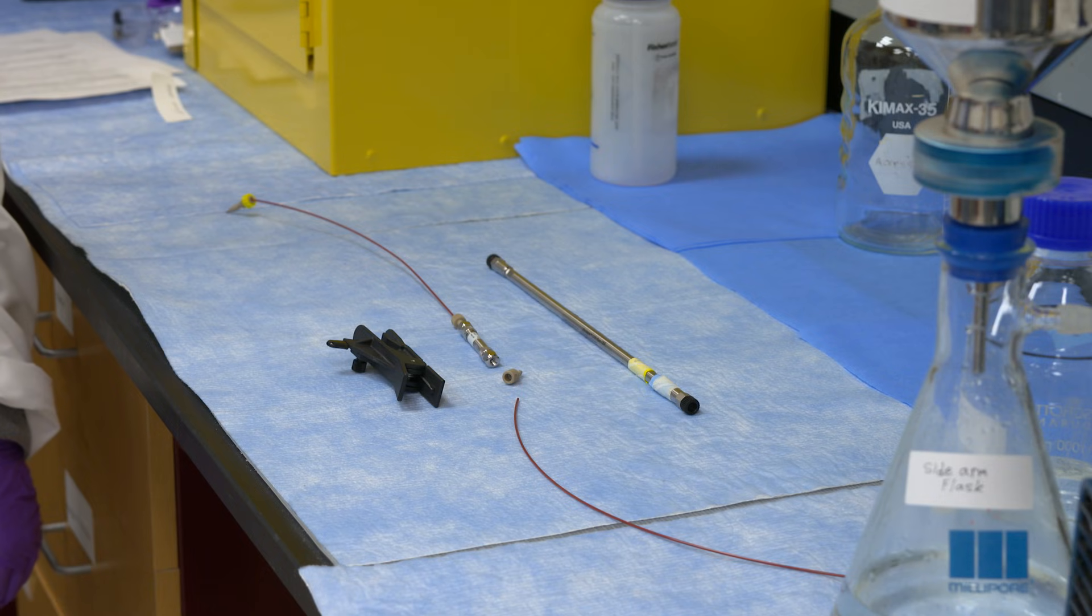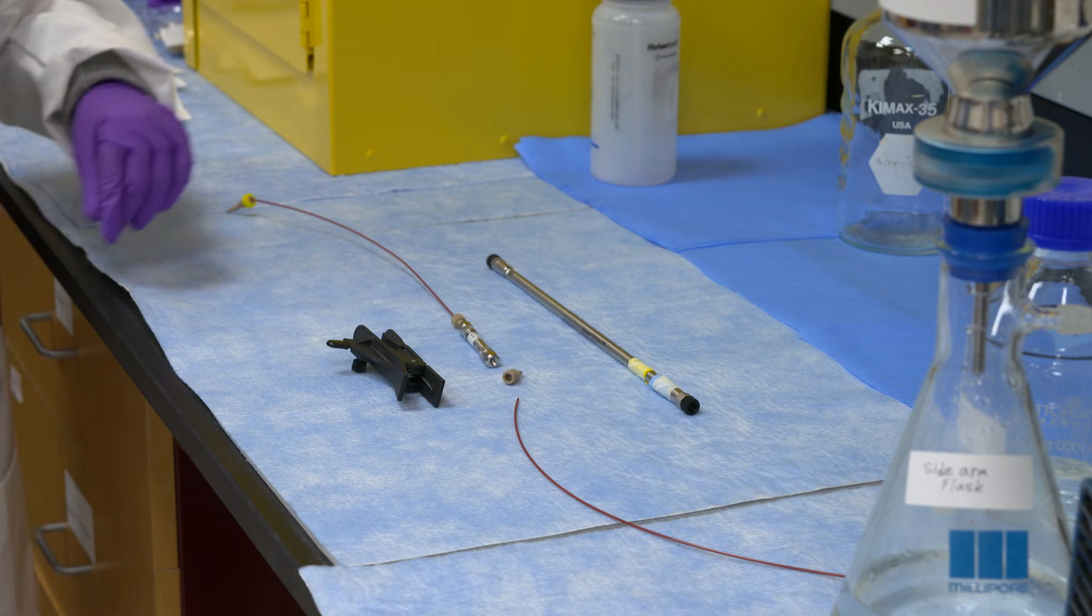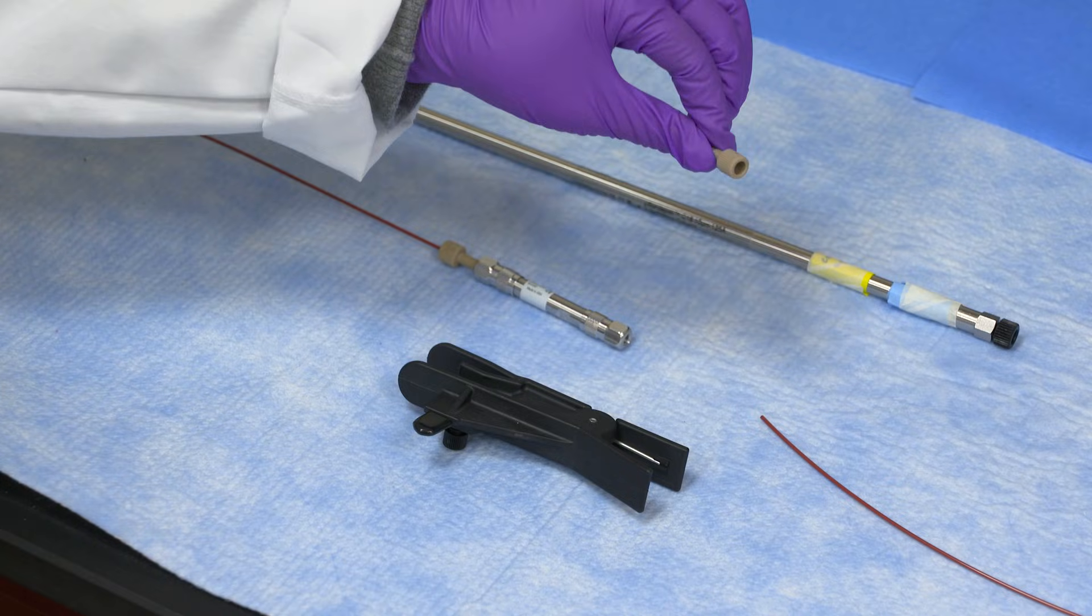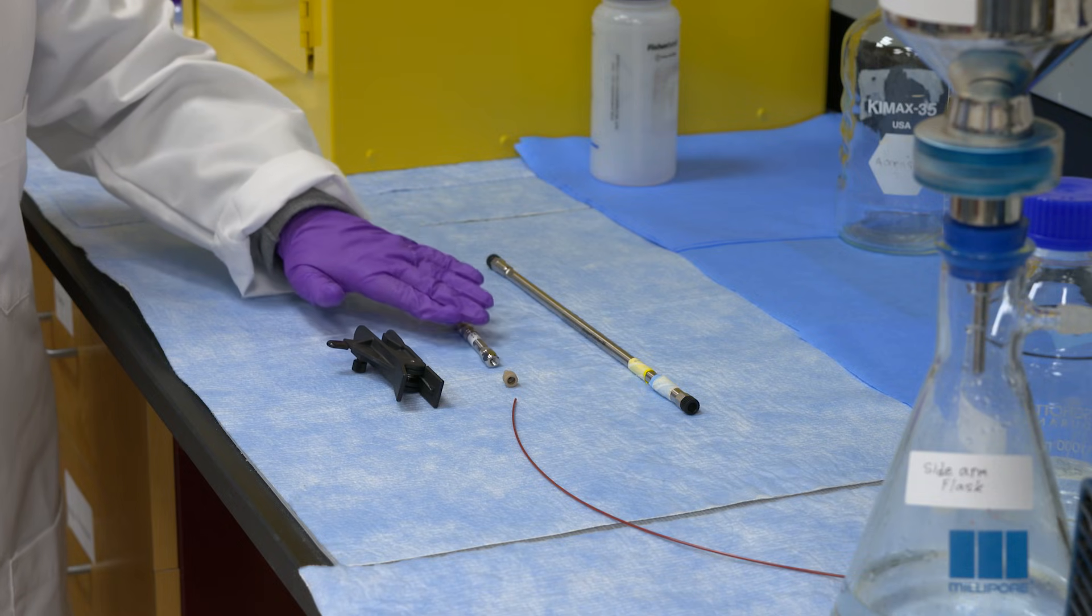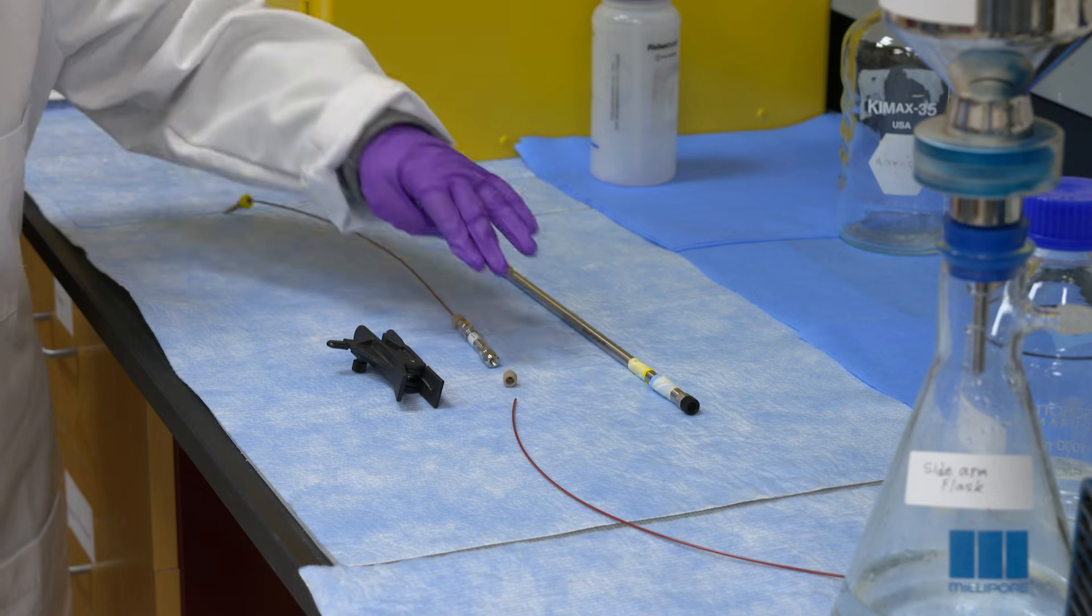Now, we will talk about the selection of the column and attaching it to a ferrule. This is called a ferrule. For this setup, you will need a peak tubing, cutter, column, and ferrule on each end.